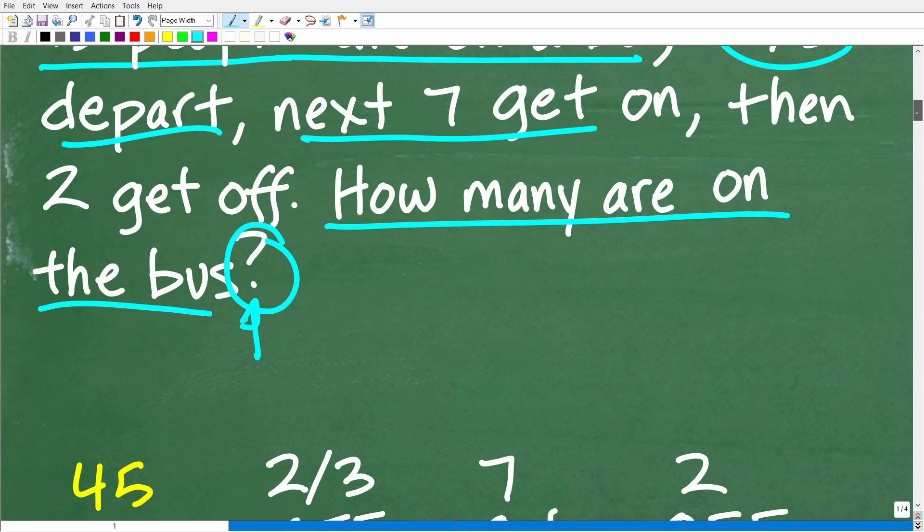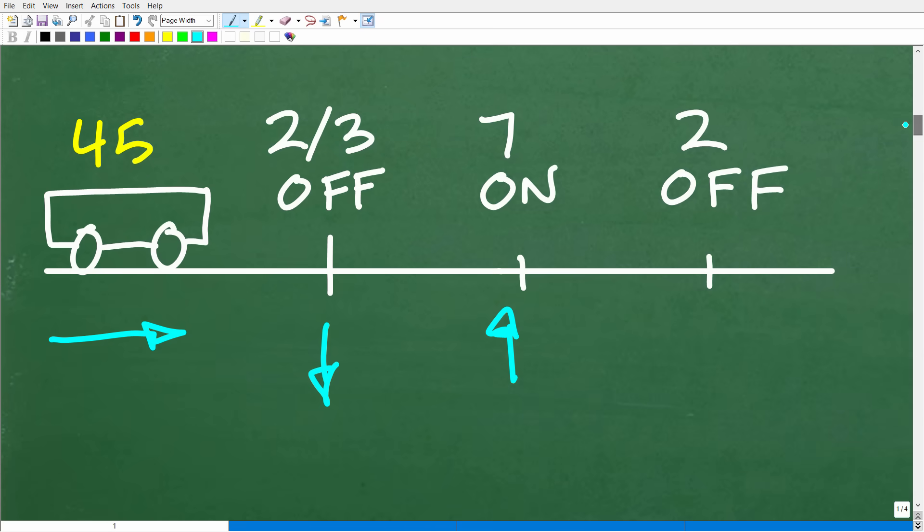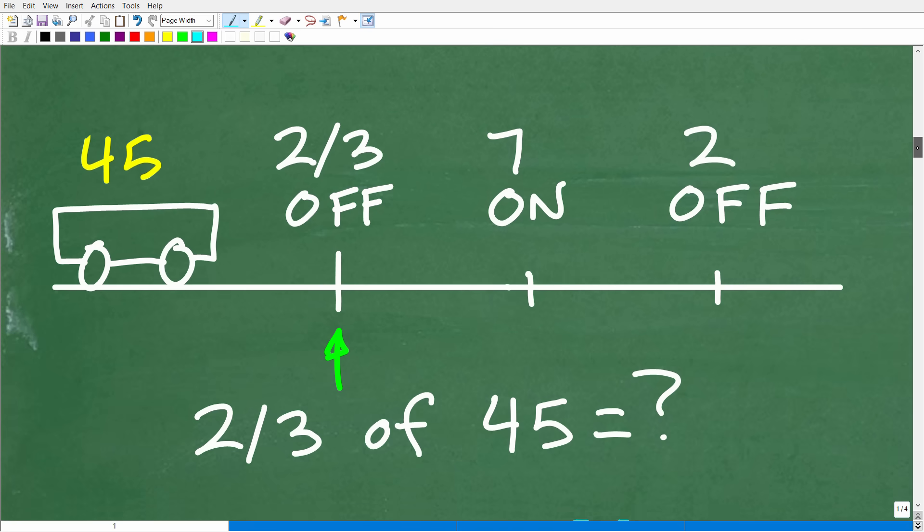Then what happens next? And of course, this is like in chronological order. Next is seven people get on the bus. So we're going to have to come over here. Seven people get on the bus. And then lastly, we have two people are going to depart the bus right here. So after all these people getting off and on and off and on the bus, how many people remain? So this is kind of a visual representation of what's going on.